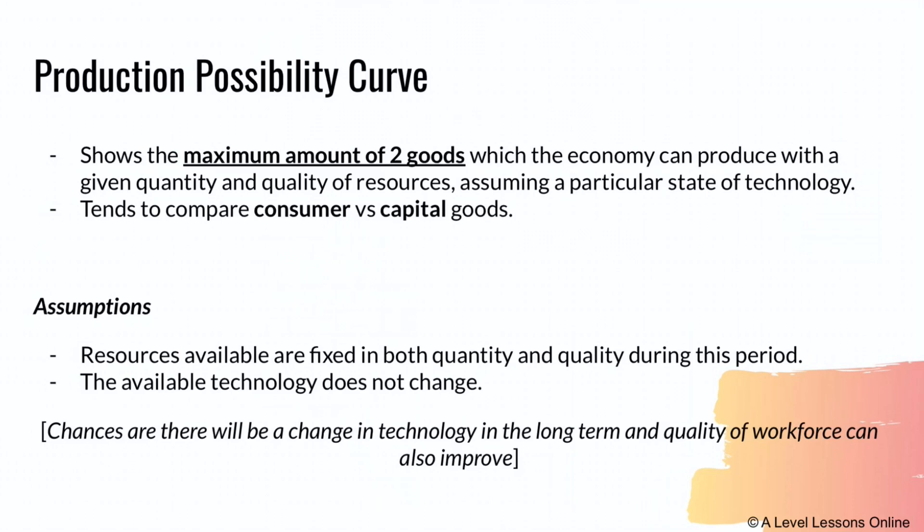The PPC shows the scale at which goods can be produced in an economy where resources are scarce. It operates under two key assumptions: first, that resources are available and fixed in both quantity and quality during this period; and second, that the available level of technology does not change. In reality, there could be a sudden surge in resources due to exports or imports, or improvements in technology over the long run.